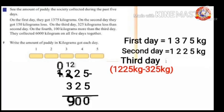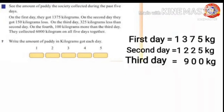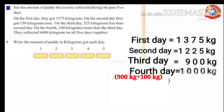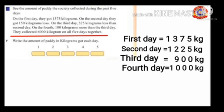Amount of paddy got on the third day equals 900 kilograms. On the fourth day, 100 kilograms more than the third day, so to find out the amount of paddy got on the fourth day, add 100 kilograms to 900 kilograms: 100 plus 900 equals 1000 kilograms.